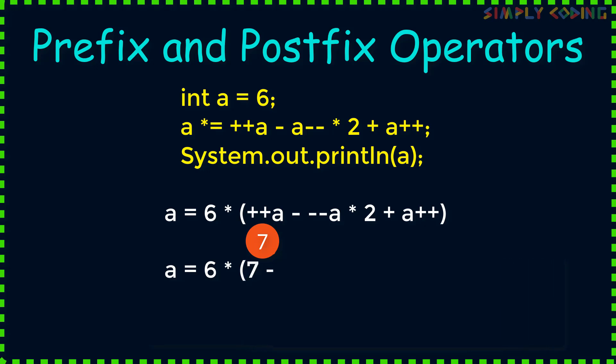Then we write minus and since it is a prefix so we decrement first and then substitute the value 6. We copy star to plus as is. Then again it is postfix so we copy 6 here and then increment it to 7. Now when we solve the equation in brackets we get 7 minus 12 plus 6 which gives us 1. We then multiply it by 6 to get 6. Now do remember we have value of a as 7 earlier but now that will be overwritten by this equal to value which is 6. So the new value of a is 6.